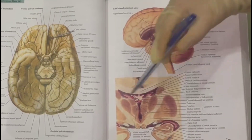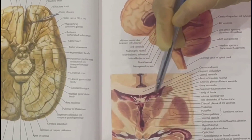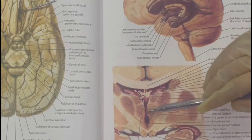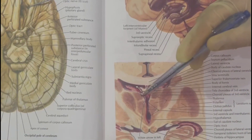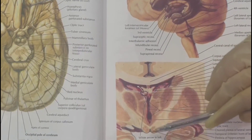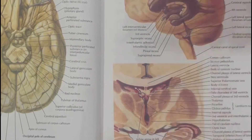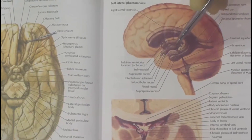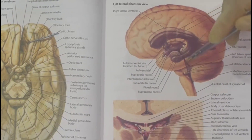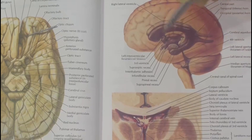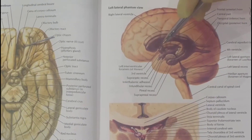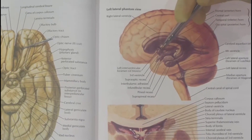If we focus on this diagram, these right here are the lateral ventricles. They are continuous with the third ventricle through the interventricular foramen, and the third ventricle is then continuous with the fourth ventricle through the cerebral aqueduct. Here you can see this is the third ventricle — it is continuous through the cerebral aqueduct with the fourth ventricle, and superiorly it communicates with the lateral ventricle through the interventricular foramen.